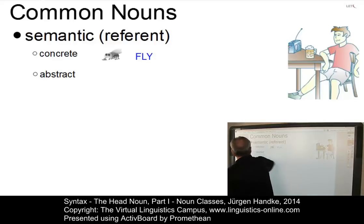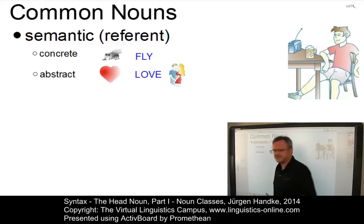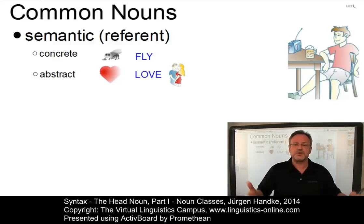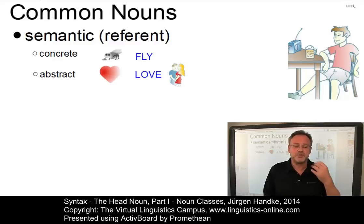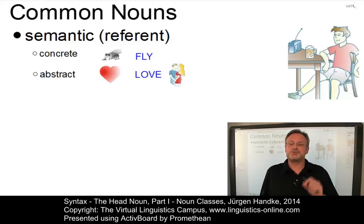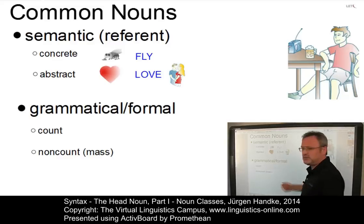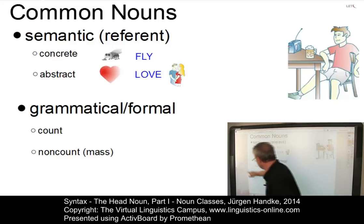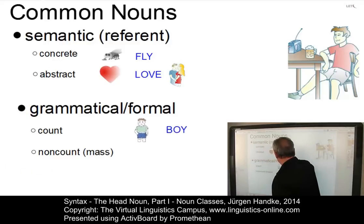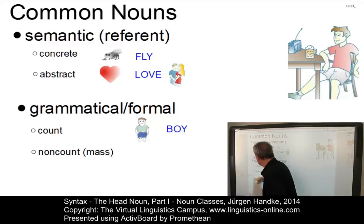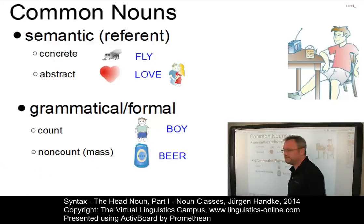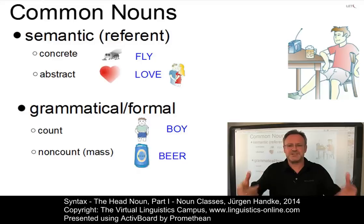An abstract noun, by contrast, is the noun 'love.' Abstract means that the concept has no physical shape or no extension. Abstract nouns are typically non-observable and non-measurable. However, we can also keep the types of nouns apart using formal criteria, in which case we can classify count nouns — an example is 'boy' — and non-count nouns — our example here is 'beer.' Let us take these formal criteria and look at count nouns first.